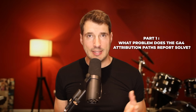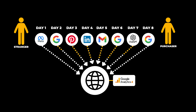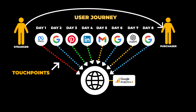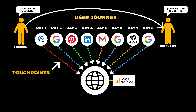The Attribution Paths Report in GA4 essentially tells a story of how someone starts off as a stranger and then becomes a purchaser. The point of this is to try and track all of the touch points across a journey. When they arrive at our website they've usually arrived from a source — it could be from organic social media, a paid search campaign, an ad on Meta, or any number of different sources. So these touch points often form a user journey, and if we were to look at each of these touch points we would be able to stitch together this story and understand how someone discovered us and also what was the last thing they did just before they purchased.